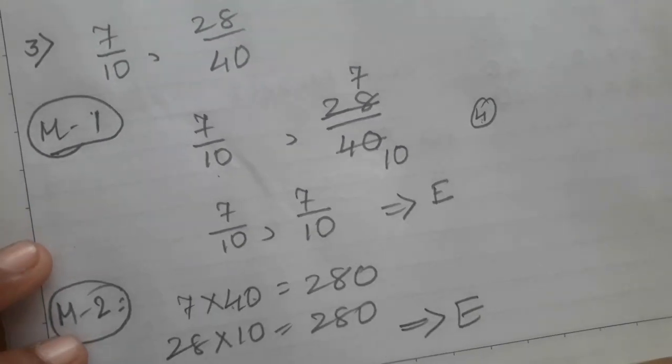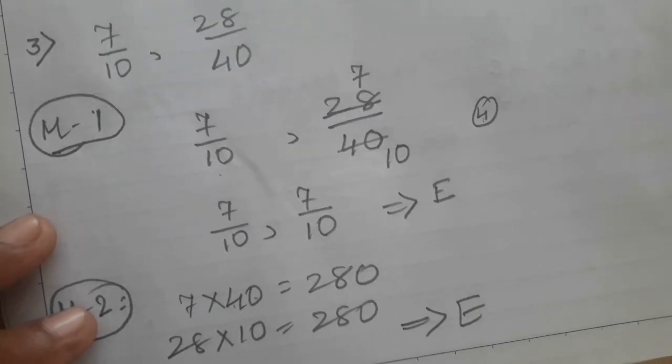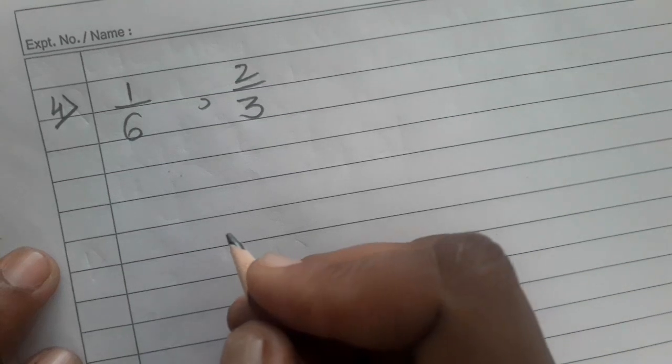Now a few questions for practice — you can do these on your own. Take this example: 1 upon 6 and 2 upon 3. It is very easy; you can do it on your own.